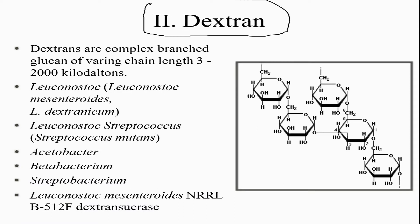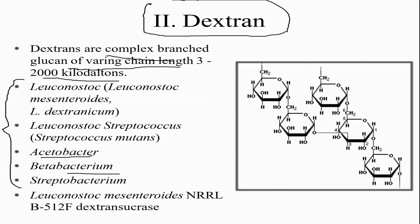Moving on to the second EPS — dextran. Dextrans are complex branched glucans of various chain lengths, ranging from about 3 to 2,000 kilodaltons. Several bacteria and microbes lead to the formation of dextran, including Acetobacter, Streptobacterium, and others such as Leuconostoc mesenteroides.